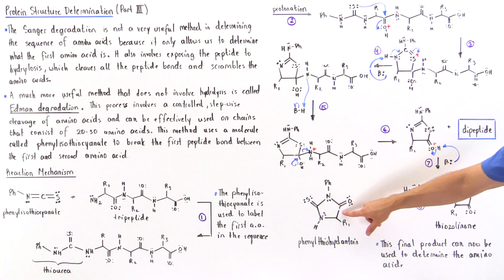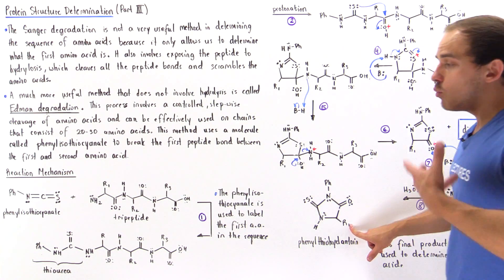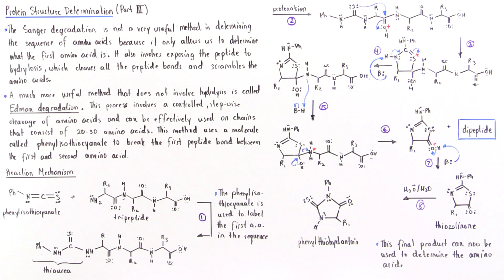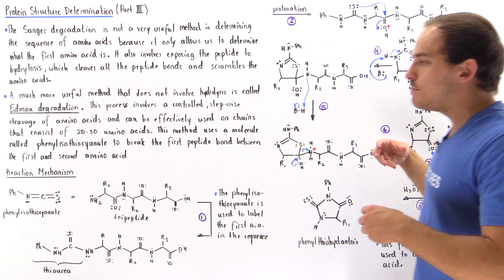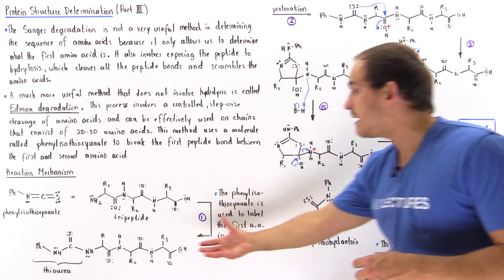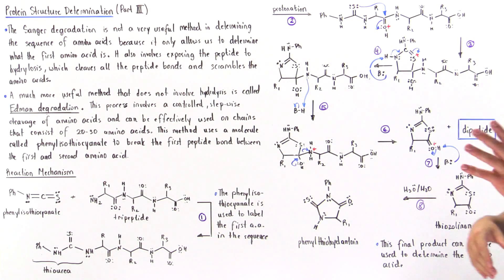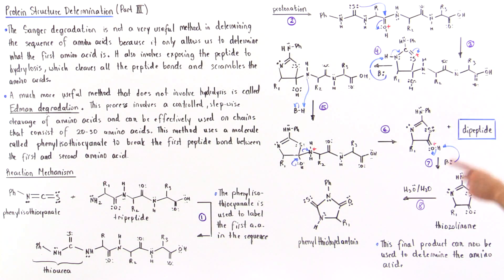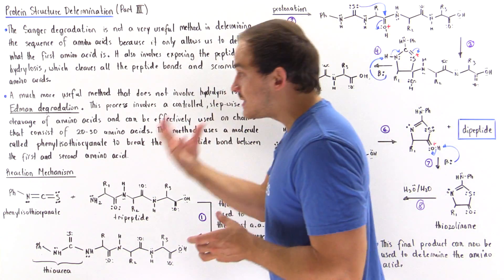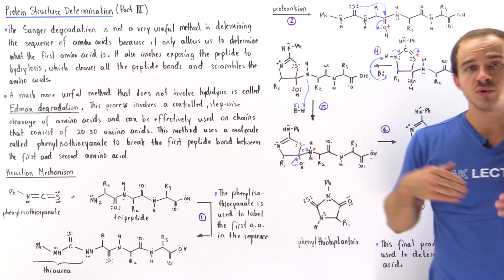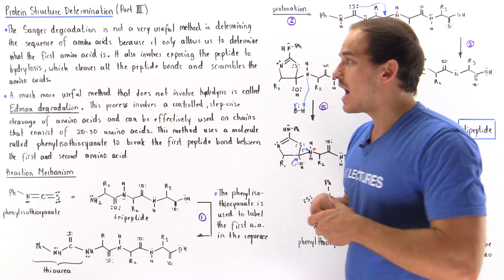Once we determine what the side chain is, we can identify the first amino acid in our sequence. We then take our dipeptide and react it in the same way in a second Edman degradation to determine the second amino acid. We can continually repeat this process to determine the entire sequence of amino acids in our peptide.